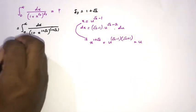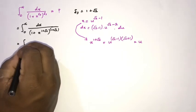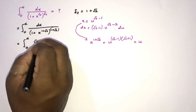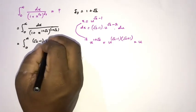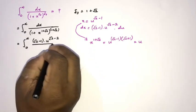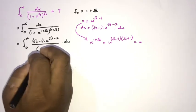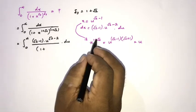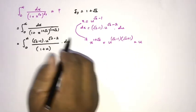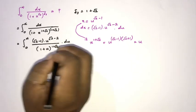We can now plug in the substitution. The limits remain 0 to infinity. So dx equals square root of 2 minus 1 times u to the square root of 2 minus 2 du, and in the denominator x raised to the 1 plus square root of 2 becomes simply u, giving 1 plus u raised to the 1 plus square root of 2.